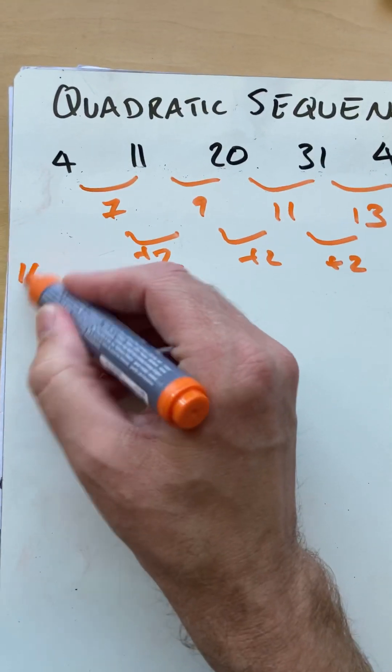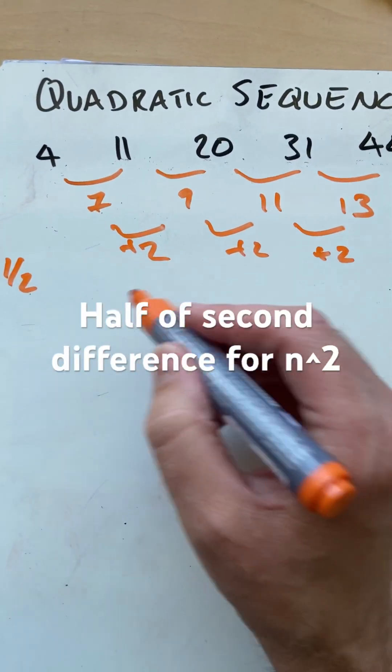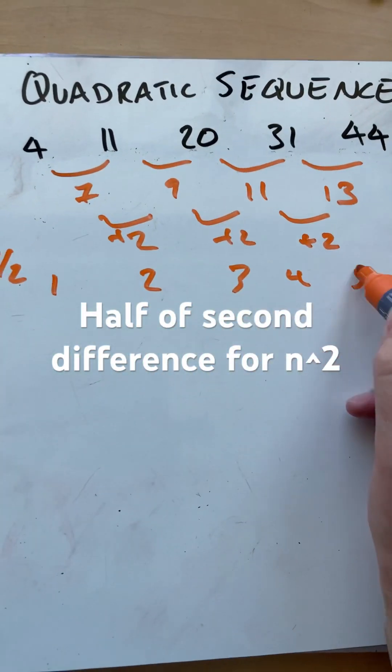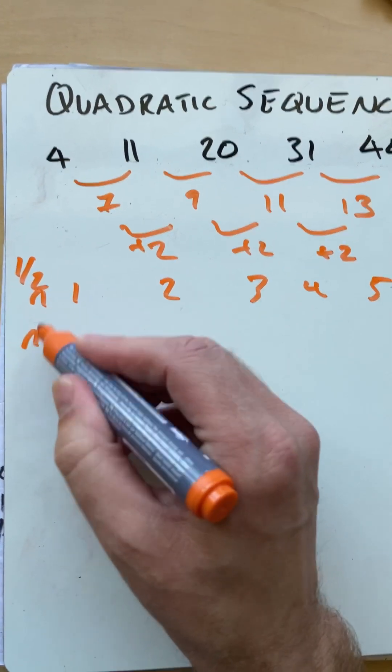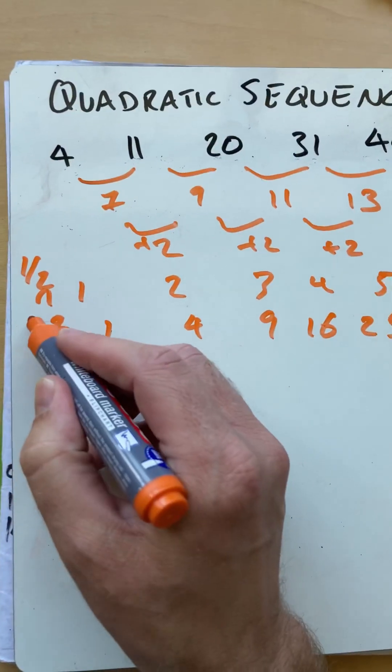So we need to just take half of that second difference to get n squared, but it'll just be 1n squared. So the terms are 1, 2, 3, 4, and 5. Those are all n squared. So n squared is 1, 4, 9, 16, 25. So we just put a 1 in front of that.